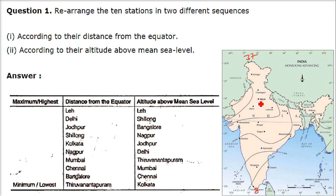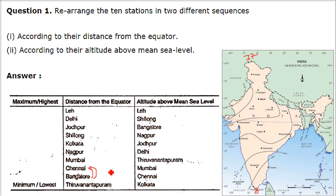So we have Leh here, then we come to Delhi, then Jodhpur, then we have Shillong, then Kolkata, Nagpur, then Mumbai, then Chennai. It should be Bangalore first and then Chennai after, so we just switch those two places. Then Thiruvananthapuram, that is Trivandrum of Kerala.